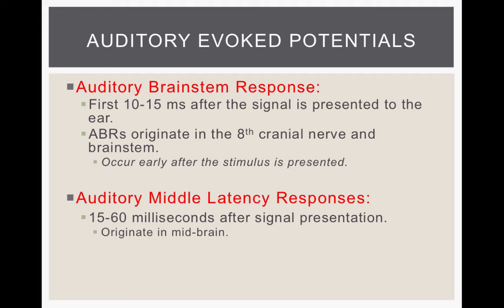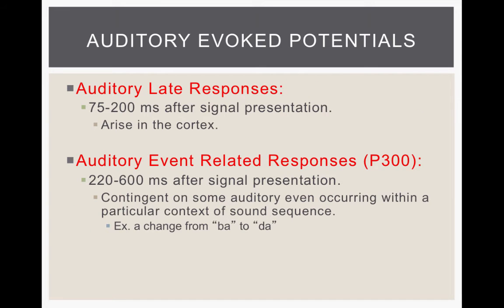Beyond the ABR, we have the auditory middle latency response, which occurs in the 15 to 60 milliseconds range, originating in the midbrain. Then there is the auditory late response at 75 to 200 milliseconds, and the auditory event-related response, the P300, from 220 to 600 milliseconds. These responses beyond the ABR — the one that occurs in the first 10 to 15 milliseconds — are not as important clinically. They are used more in research settings.